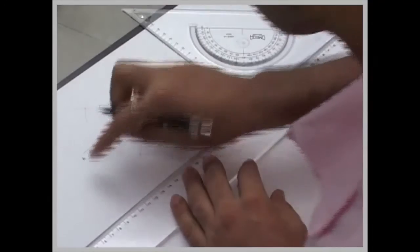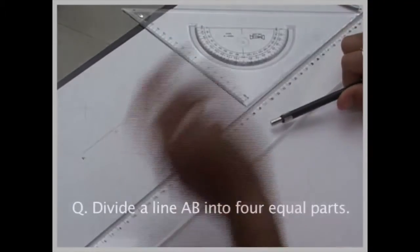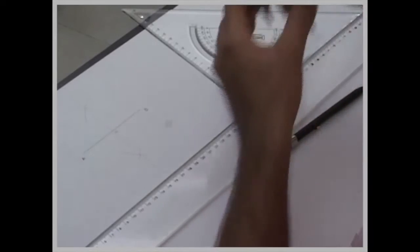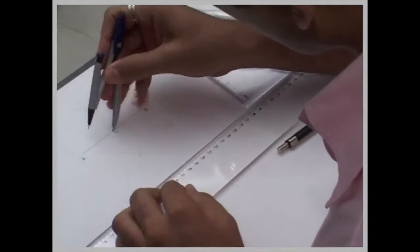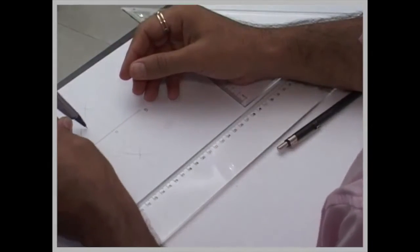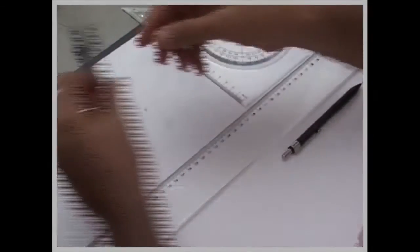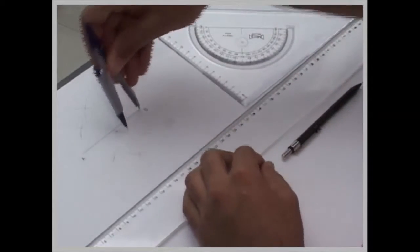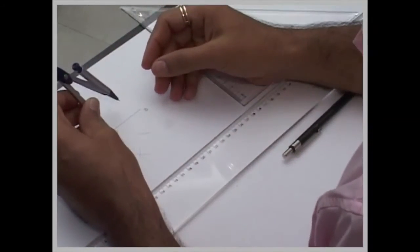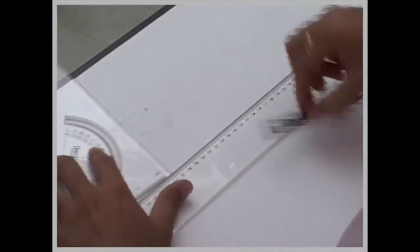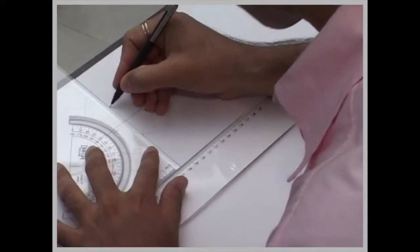Thus we have divided a line into two parts. If I want to divide this line into four parts, then I can divide AO into two parts using the same method, as well as I can divide BO into two parts. So we have divided the line into four equal parts.